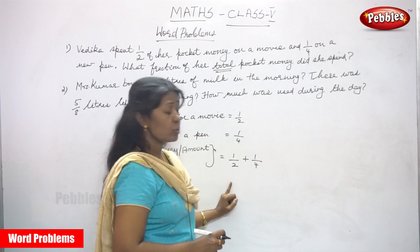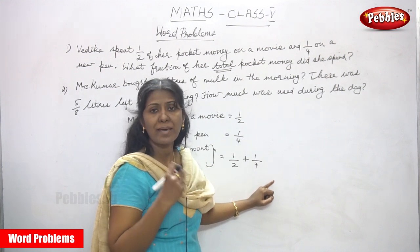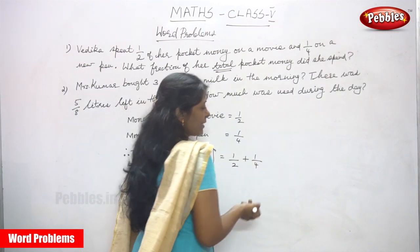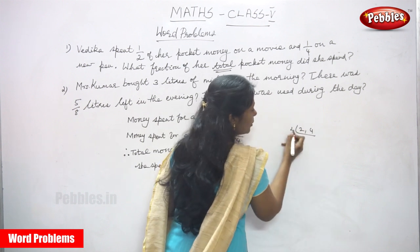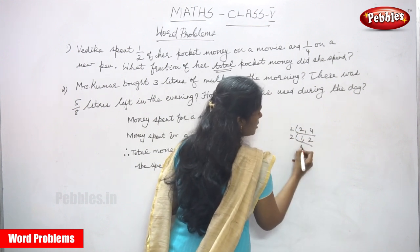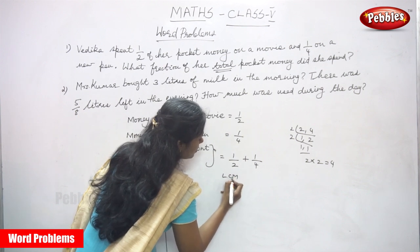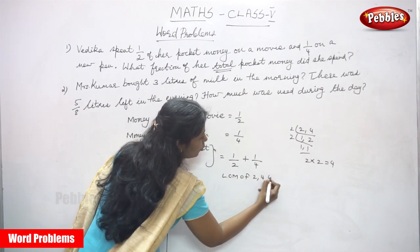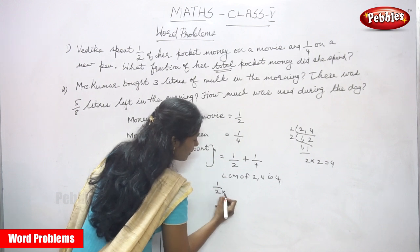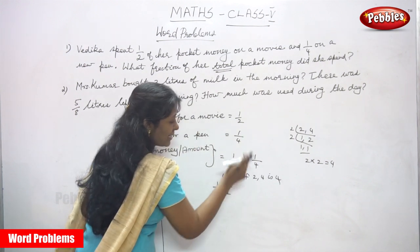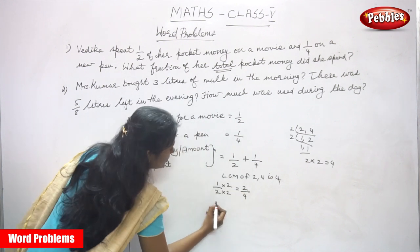Here 2 is the denominator and 4 is the denominator. The denominators are not the same, so we need to make a common denominator using LCM. Taking LCM of 2 and 4: LCM is 4. So for 1 by 2, multiply numerator and denominator by 2 to get 2 by 4.